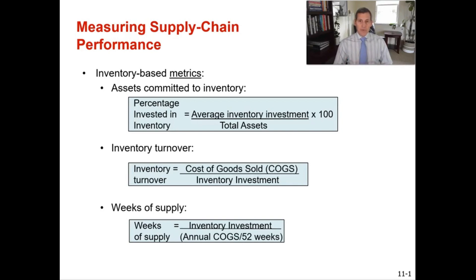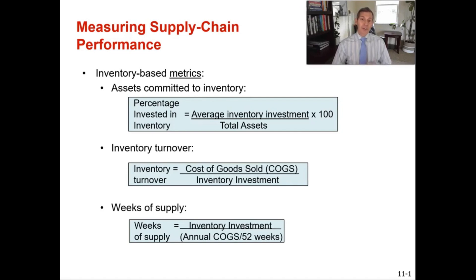With assets committed to inventory, in general a smaller number is better. You want to have less inventory committed to your total assets. With inventory turns, in general a higher number is better. You want to be turning over your inventory more often — you're getting new inventory in, selling it, it's not sitting on the shelves for very long, and your cash is freed up to spend on other inventory investments.